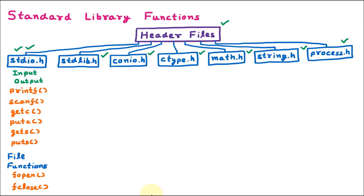The next header file is stdlib.h. Here 'std' is standard and 'lib' is library, so this is the standard library, used for general utility. In the stdlib header file, we have various functions. The first function is atof — 'a' signifies argument, meaning string to 'f', where 'f' signifies float. So we are converting a string to float.